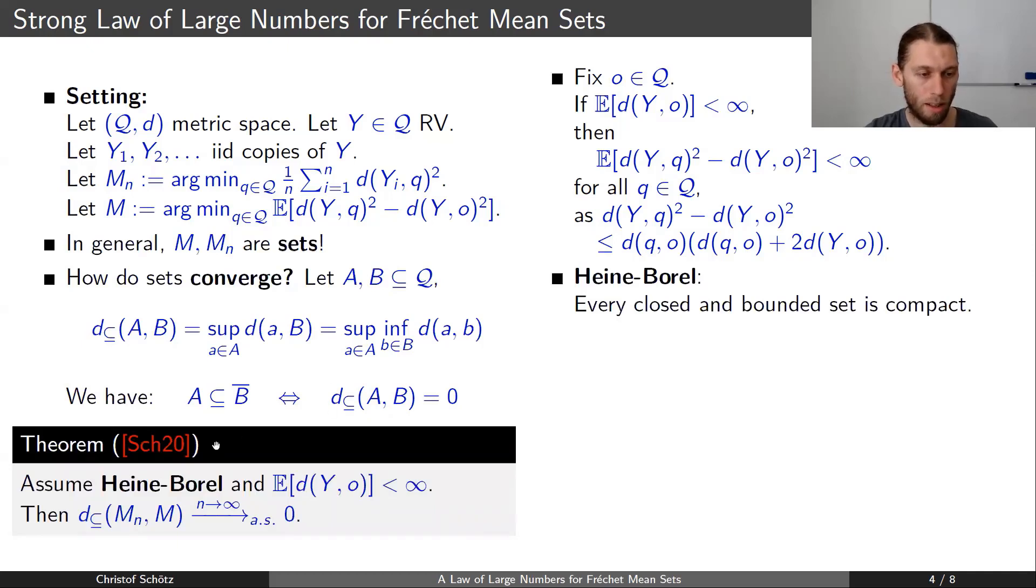The main theorem is then as follows. We assume a Heine-Borel condition and a first moment condition, and then we have convergence of the sample Fréchet mean to the population Fréchet mean in this subset distance almost surely.